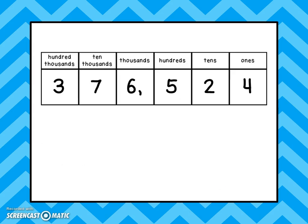Take a look here — I have a place value chart. You can see it goes from the hundred thousands all the way down to the ones. We have the number 376,524. The four is in the ones place, so it's four ones. The two is in the tens place — two groups of ten equals twenty. The five is in the hundreds place — it's five groups of one hundred, or five hundred.